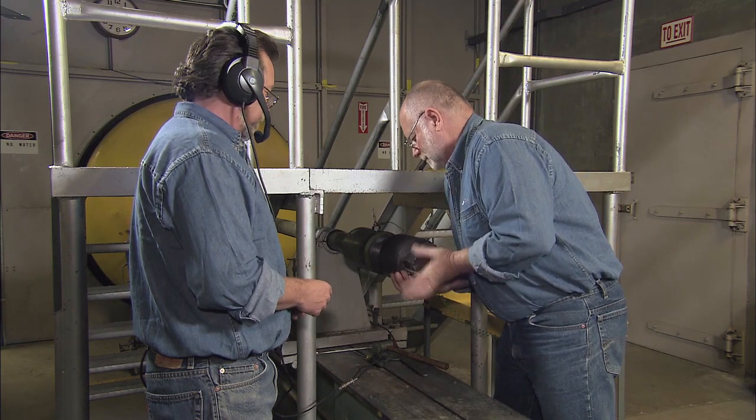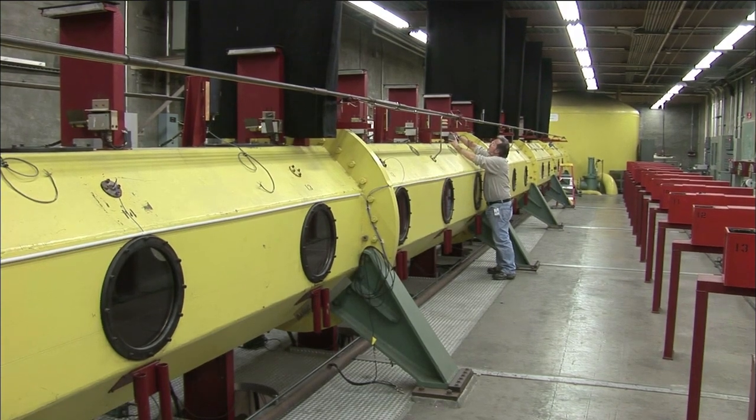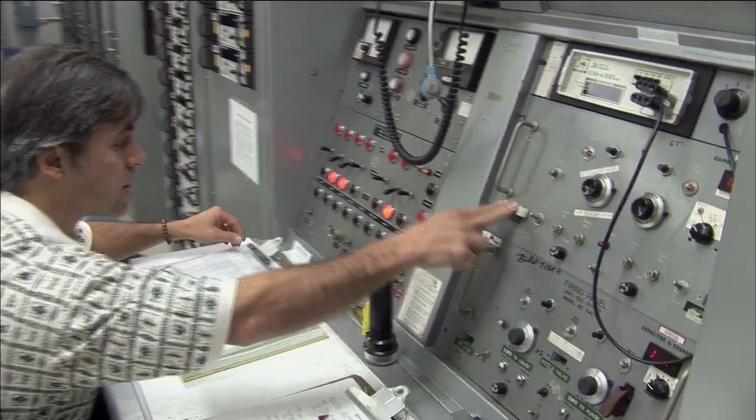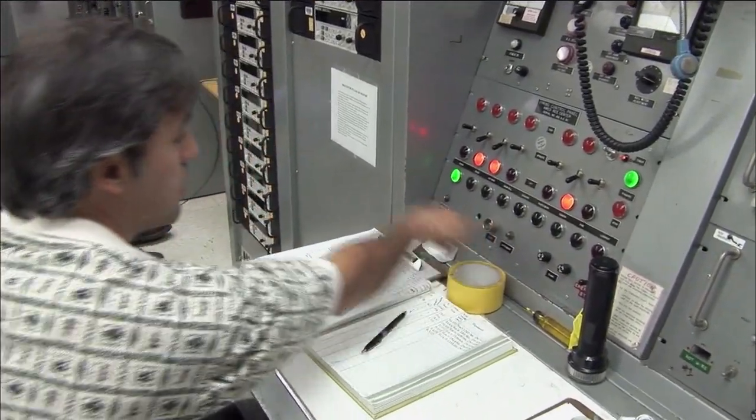Built in the 1960s to support the Apollo missions, Ames' Horizontal Free Flight Facility can fire models through a 75-foot-long test chamber at speeds ranging from 500 to 18,000 miles per hour.